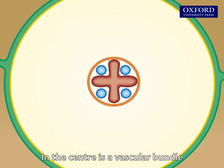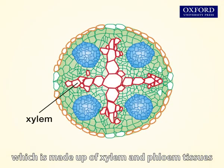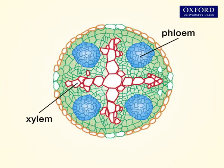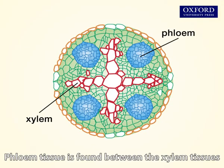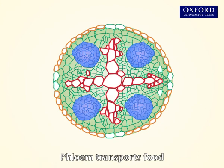In the center is a vascular bundle, which is made up of xylem and phloem tissues. Phloem tissue is found between the xylem tissues. Xylem transports water and minerals; phloem transports food.